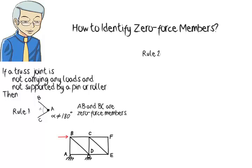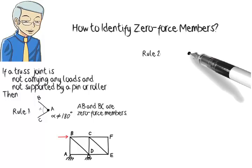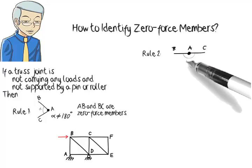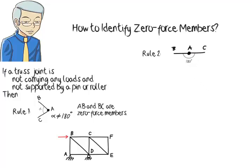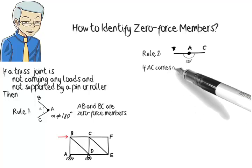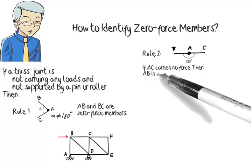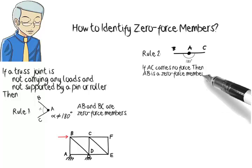Rule 2. If the joint connects two members only, and the members are collinear, that is, the angle between them is 180 degrees, and one of the members carries no internal force, the other one is also a zero-force member.